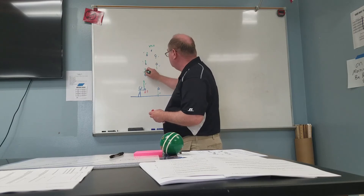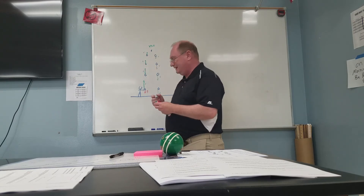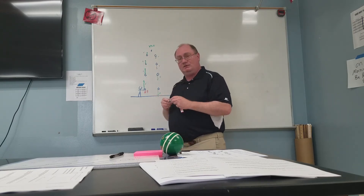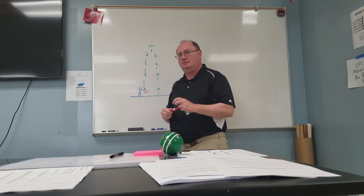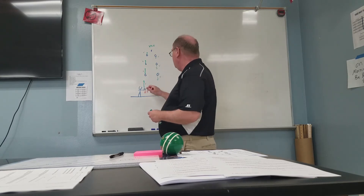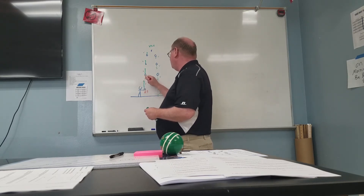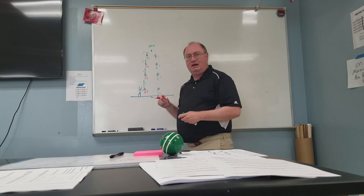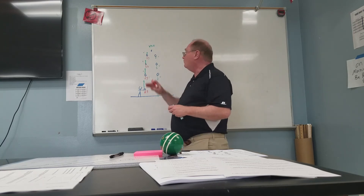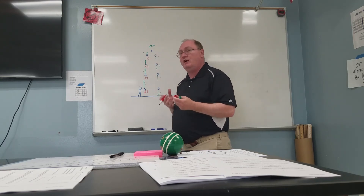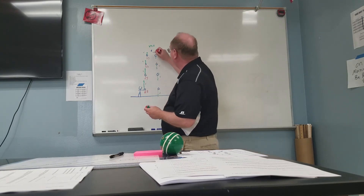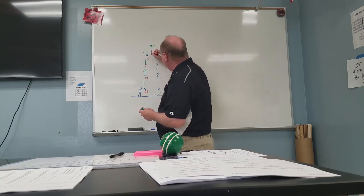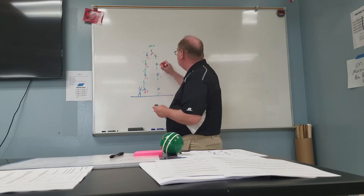So, those are our velocities. The acceleration, however, is going to be the same all the time. Gravity is always at 9.8, always acting down at 9.8 meters per second squared. Even at the very top, gravity is still acting. If gravity turned off at the very top, it wouldn't fall back down. So there has to be something causing it to accelerate downward, and that's gravity.